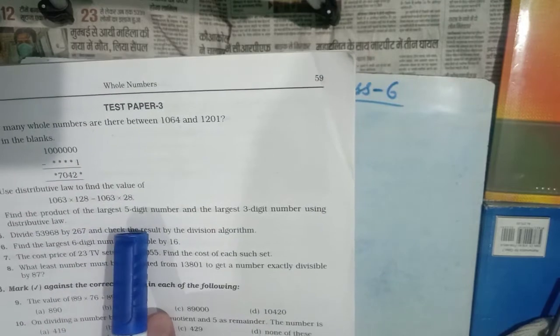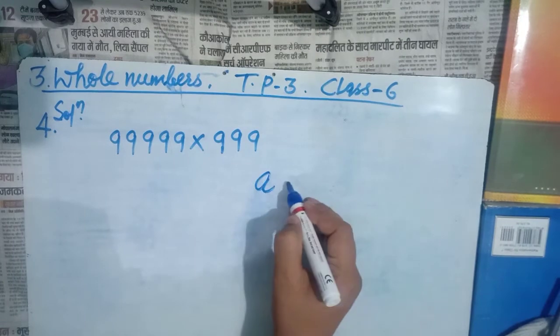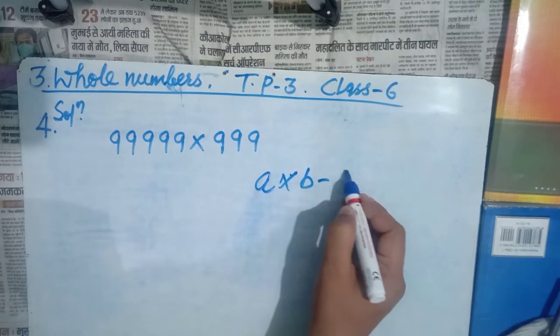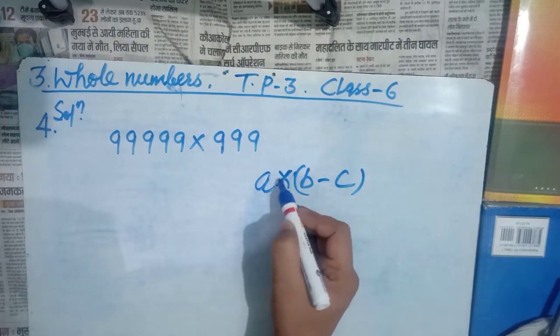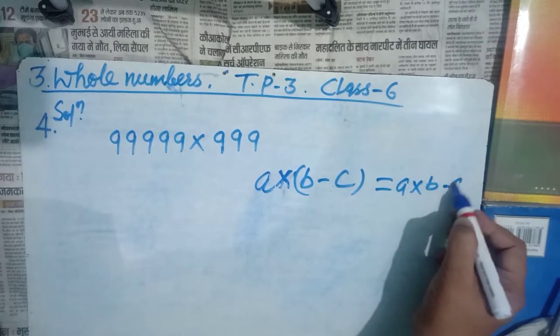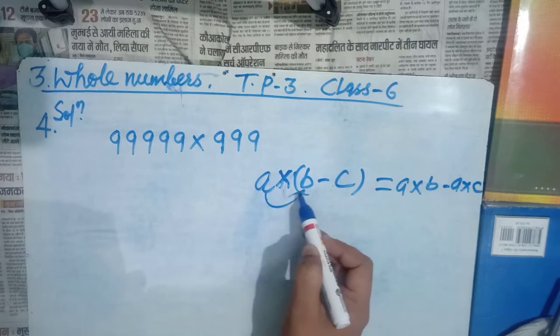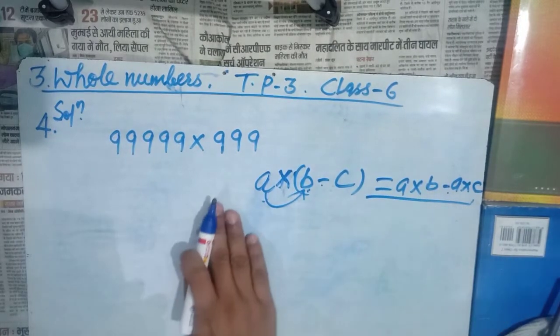The question says: find the product of the largest five-digit number and the largest three-digit number using the distributive law. Let me remind you about the distributive law. Suppose a × (b − c) — this is the distributive law of multiplication over subtraction. This can be written as a×b − a×c. That is the distributive law.